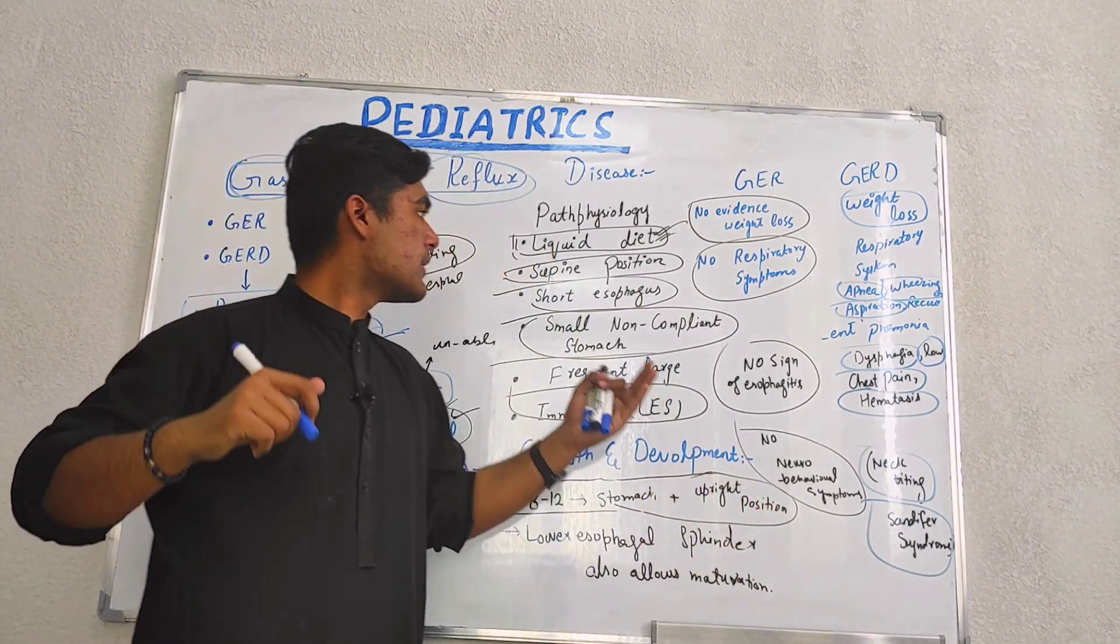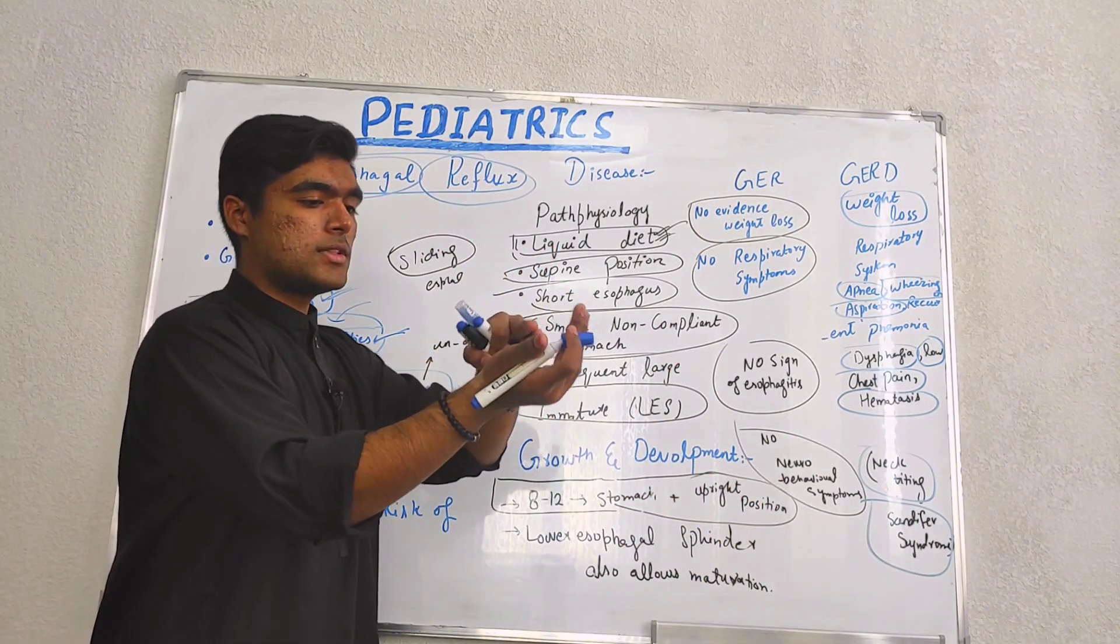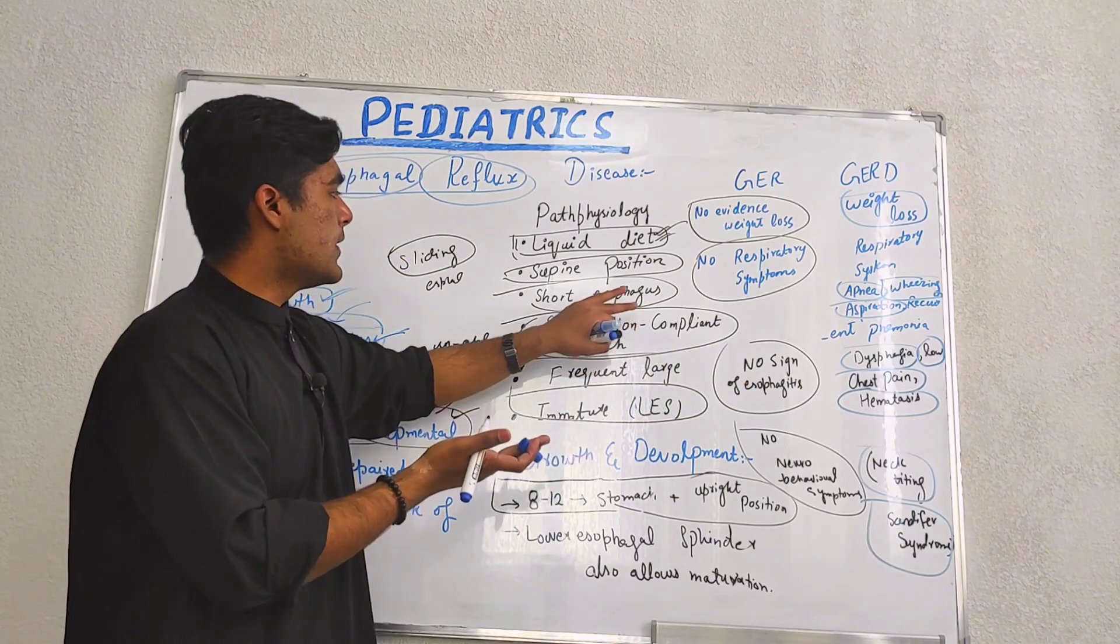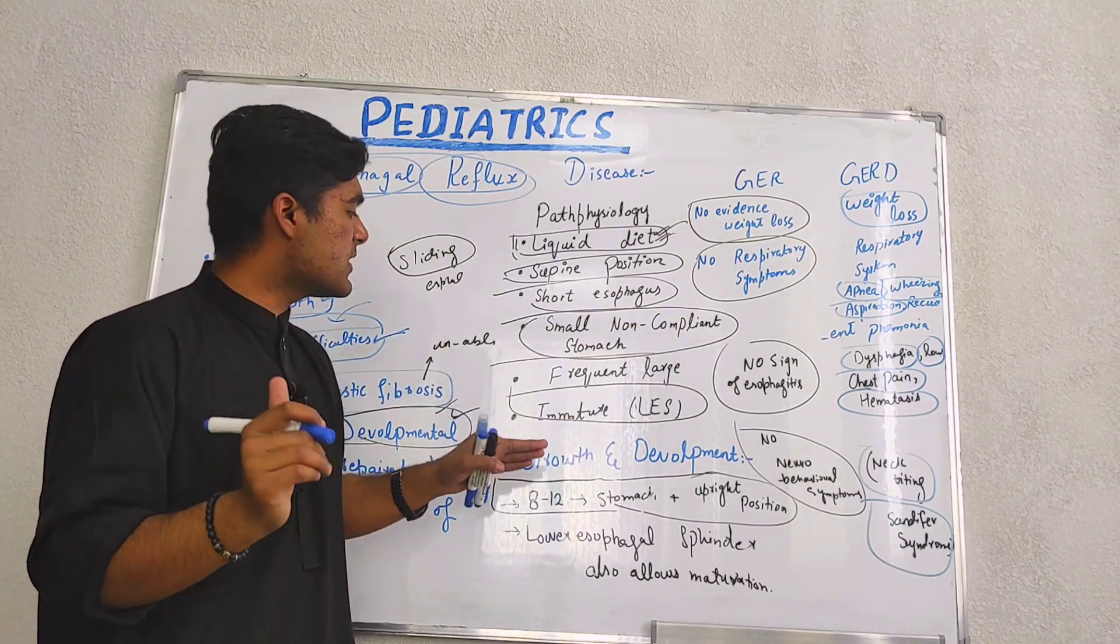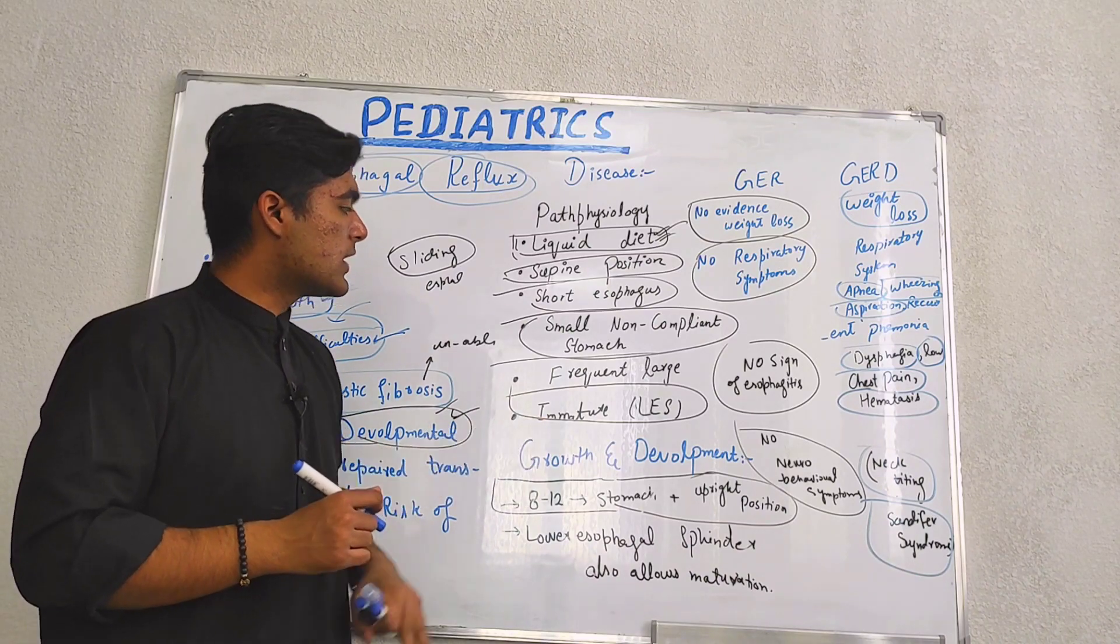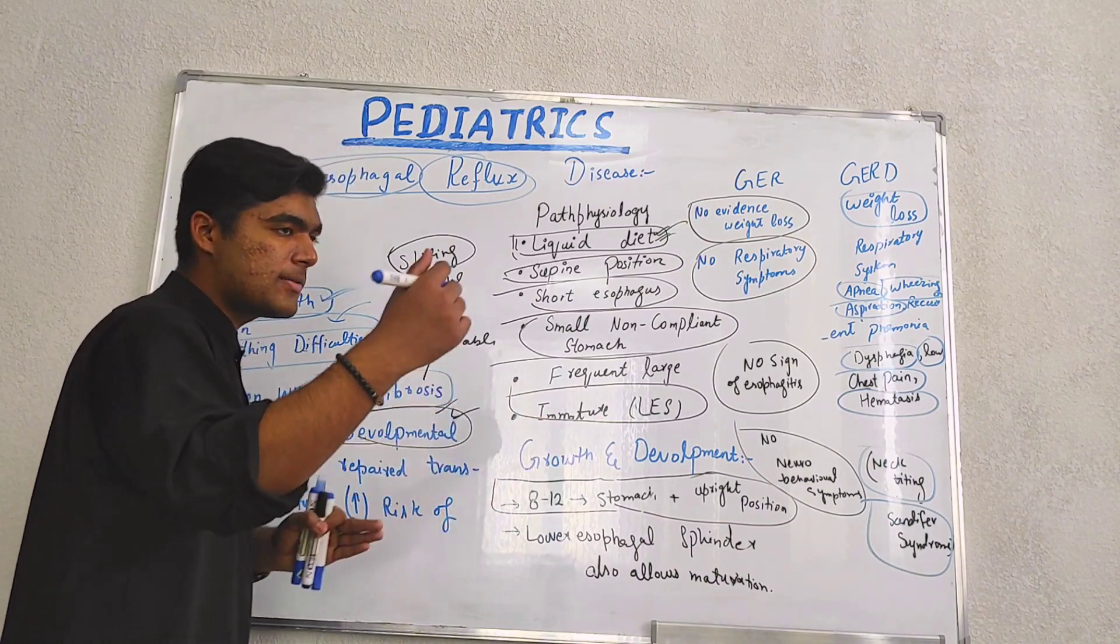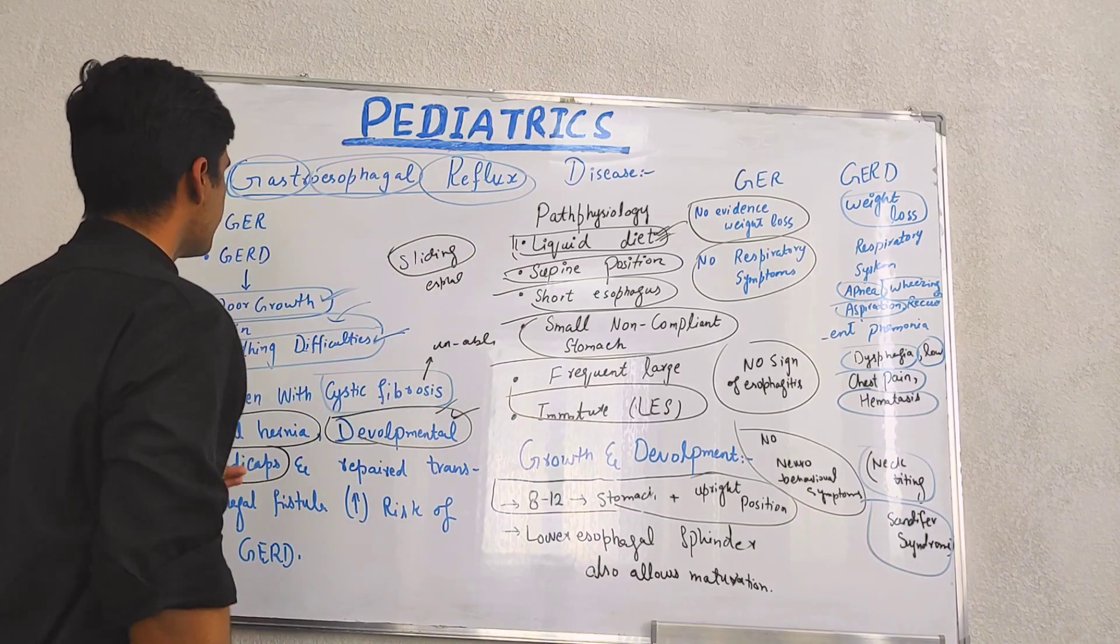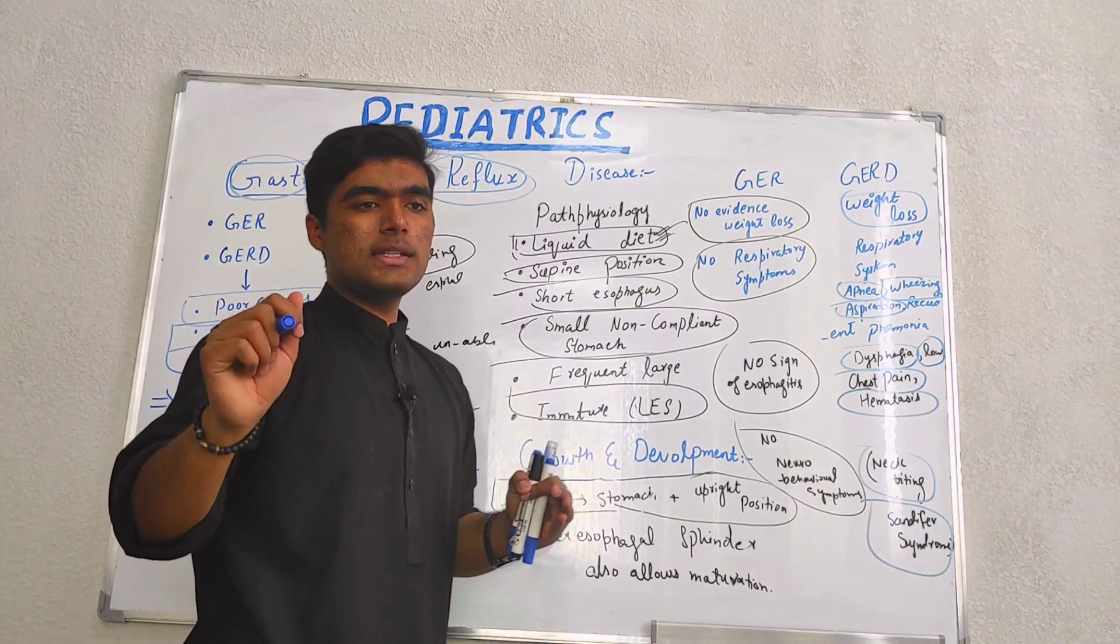That is basically due to overliquid diet, the child is in supine position, short esophagus, immature stomach development. In the same way, we have an immature lower esophageal sphincter, and that will ultimately lead us to gastroesophageal reflux.